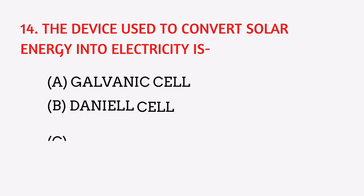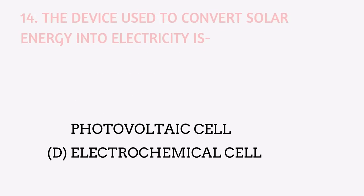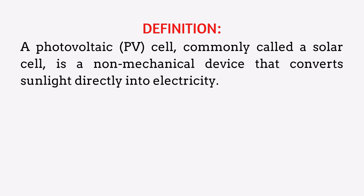The device used to convert solar energy into electricity is what? The answer is a photovoltaic cell. The photovoltaic cell, commonly called a solar cell, is a non-mechanical device that converts sunlight directly into electricity.